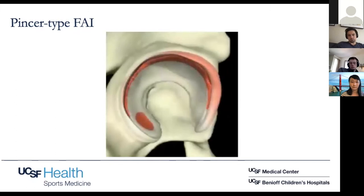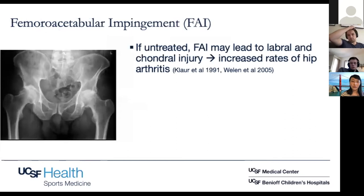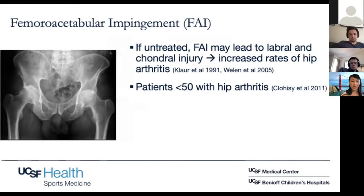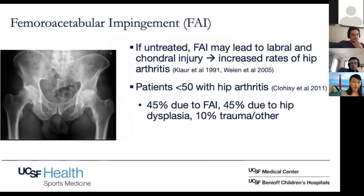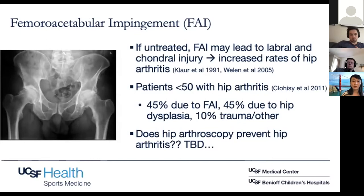Why do we care about FAI? Studies have shown that if untreated, FAI can progress to labral and chondral injury and lead to increased rates of hip arthritis. Clohisy did a study showing about half of young patients with bad hip arthritis had it due to FAI, half had hip dysplasia, and about 10% were due to trauma. What we don't really know is whether hip arthroscopy truly prevents hip arthritis — that's to be determined. I tell patients that FAI is associated with an increased risk of developing OA in the future, but we're not sure yet if our intervention prevents it. I don't recommend prophylactic surgery for asymptomatic FAI patients.